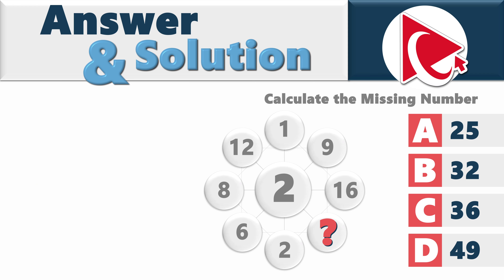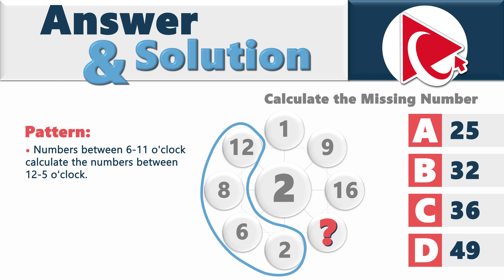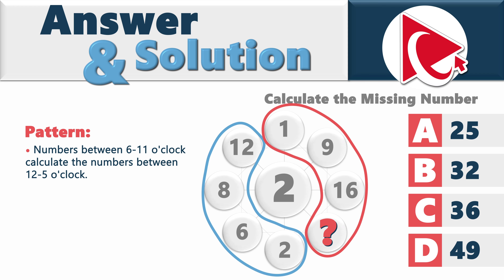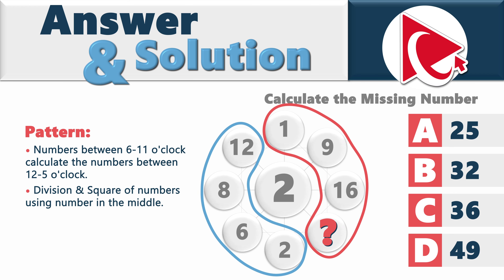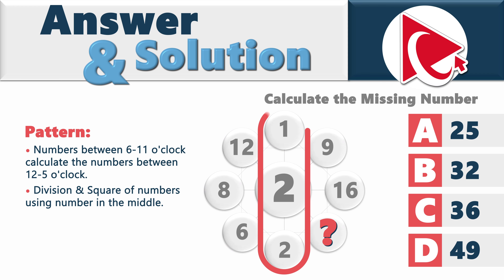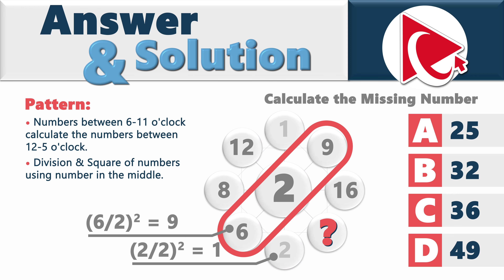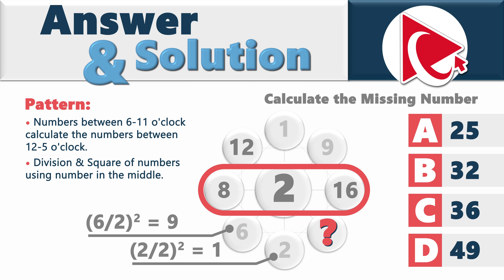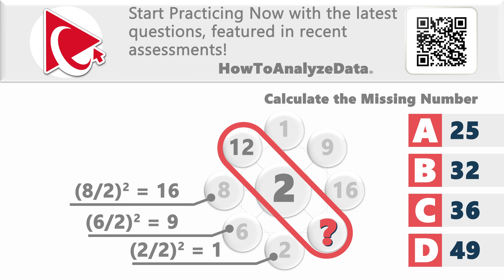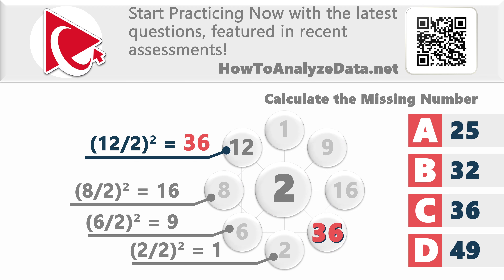You need to detect the pattern, which consists of two important elements. Numbers between 6 and 11 o'clock calculate the numbers between 12 and 5 o'clock. To complete the calculations, you divide by the middle number and then square the result. For example: 2 ÷ 2, squared, equals 1. Then 6 ÷ 2, squared, equals 9. Then 8 ÷ 2, squared, equals 16. So to calculate the missing number: 12 ÷ 2, squared, equals 36.